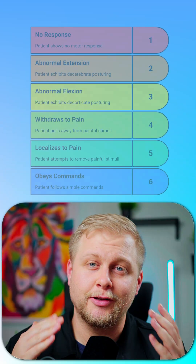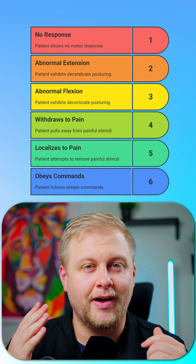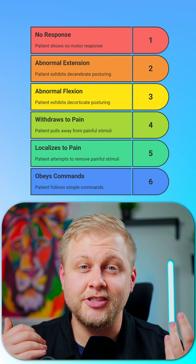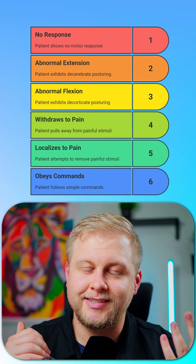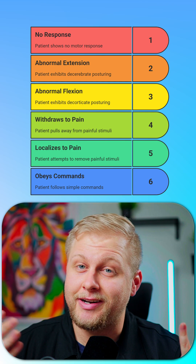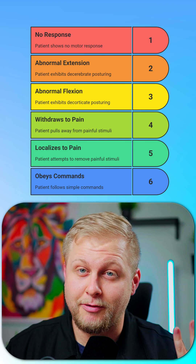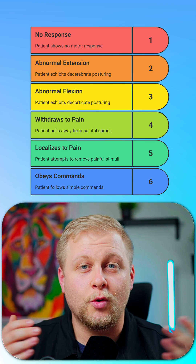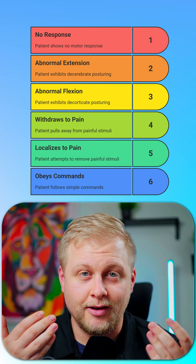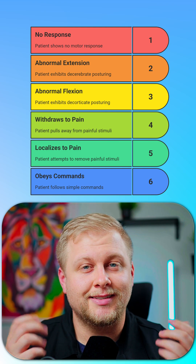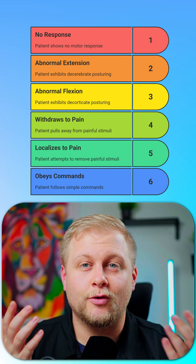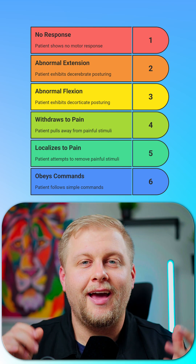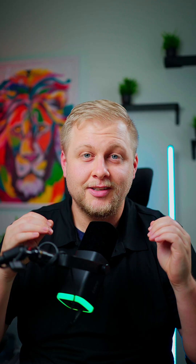The motor response score shows the integrity of the nervous system and its pathway from the brain to the muscles. A six out of six follows commands. Five out of six is when they move to where you are touching. A four out of six is when they move when you're touching them but not specifically that region. A three out of six is decorticate posturing. A two out of six is decerebrate posturing. And a one out of six is nothing at all.